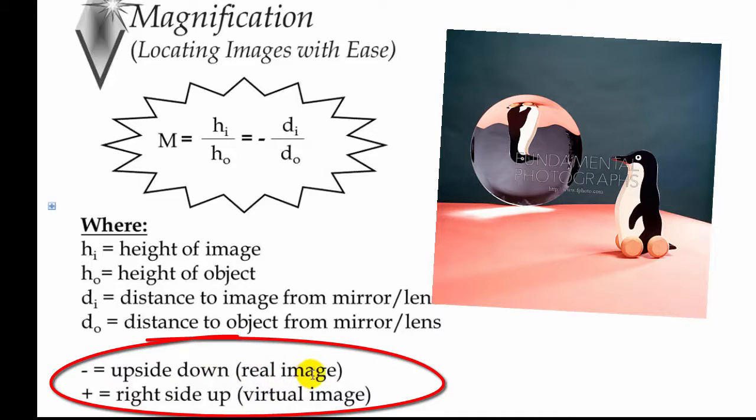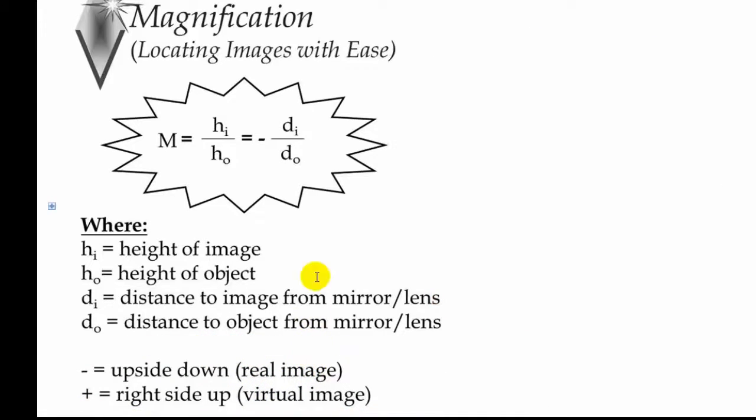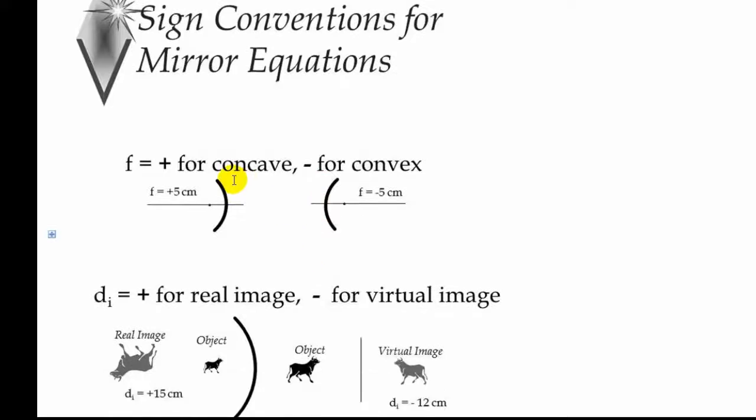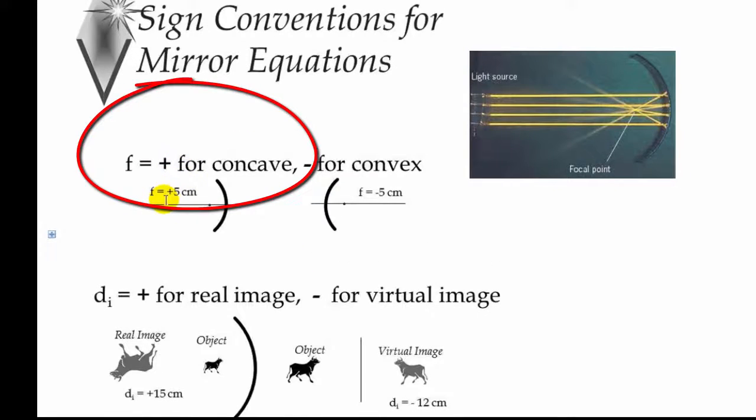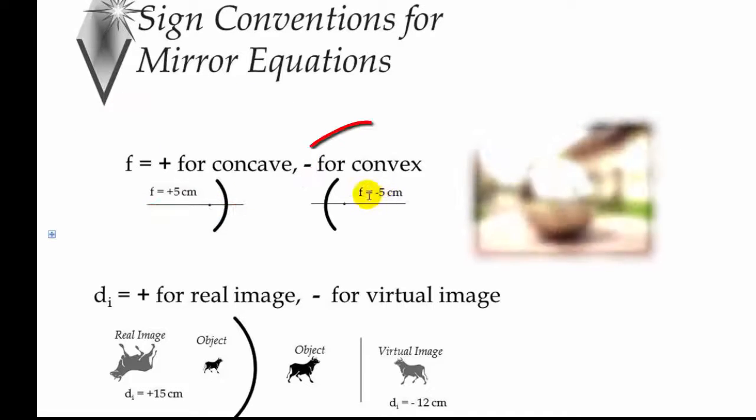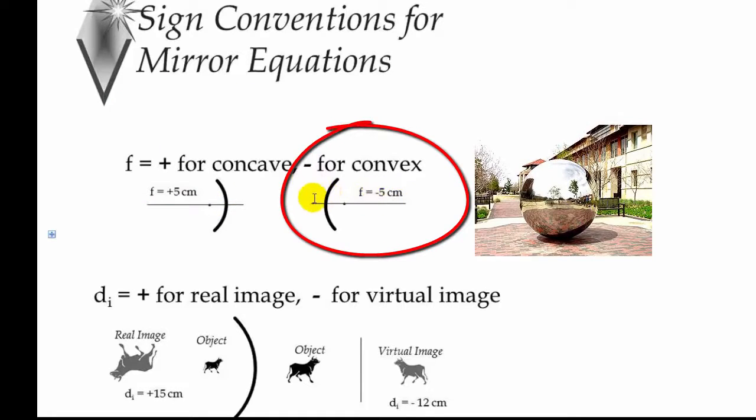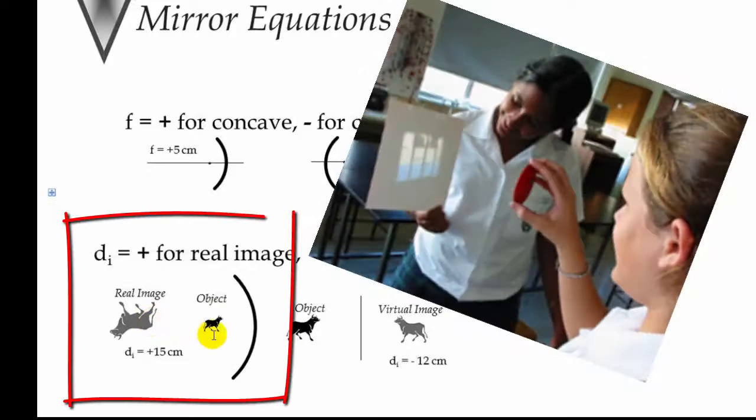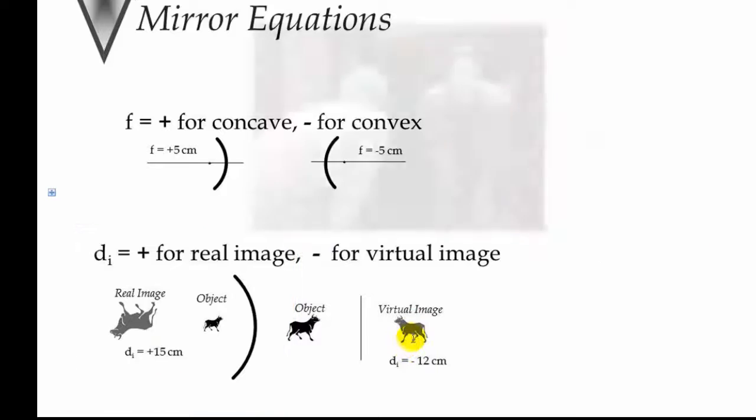Because the only time you get a real image is when you're outside the focal point of a concave mirror. It comes out upside down. And then the last thing about the image equation is you have to remember that for a concave mirror, the focal point is a positive focal point because it pulls the light together. For a convex mirror, it's going to be negative because it spreads the light out. And for the distance of the image, it's positive if it's a real image because you're outside the focal point for a concave mirror. So like a telescope or a slide projector or a multimedia projector.